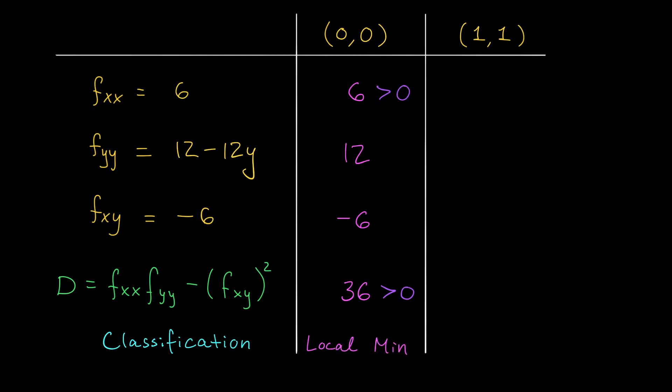We're going to do the exact same thing with (1,1). When we plug into fxx, we get 6. When we plug into fyy, we're going to get 12 minus 12, that's 0. When we plug into fxy, we get minus 6. And now we have to compute this d function. We take fxx times fyy, that's 0. And then we subtract fxy squared. That gives us minus 36.